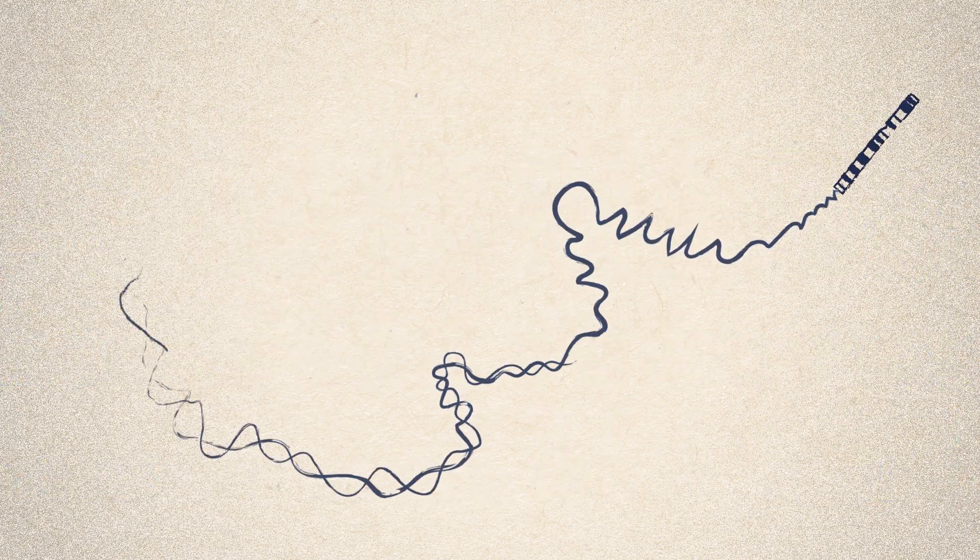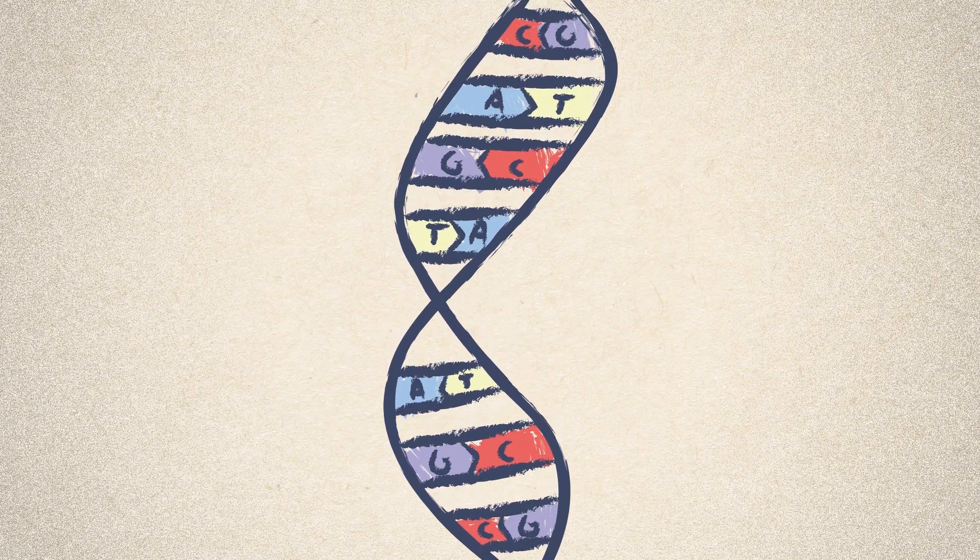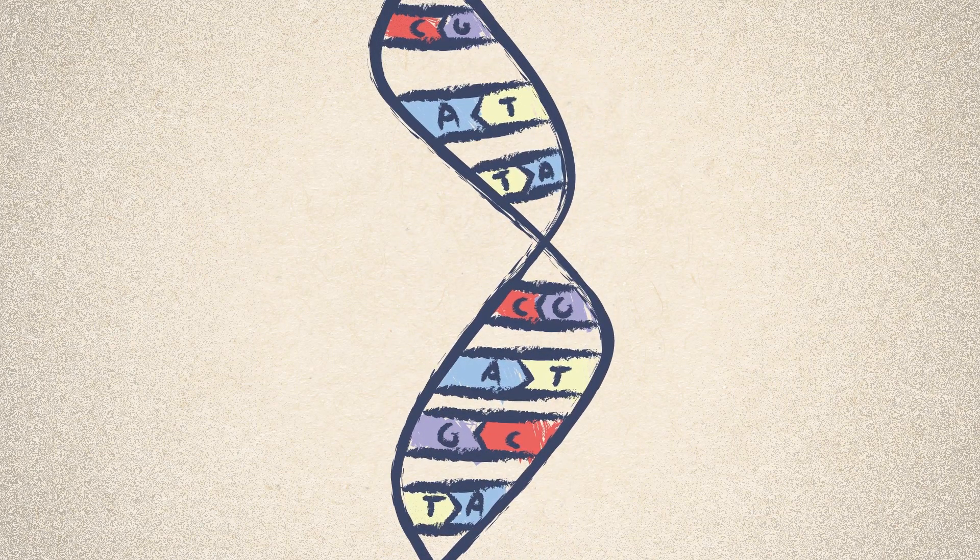The letters represent chemicals along the tightly packed strands of DNA known as A, C, G and T. The order or sequence of the DNA letters is important.